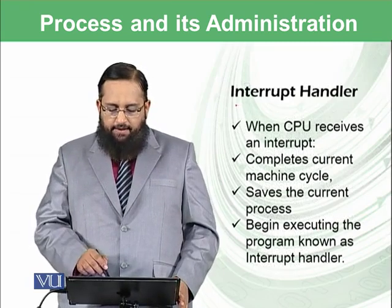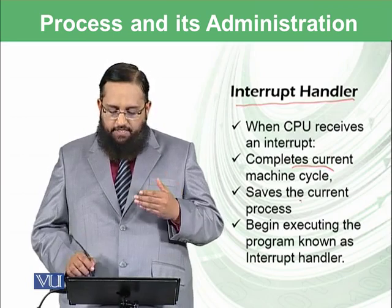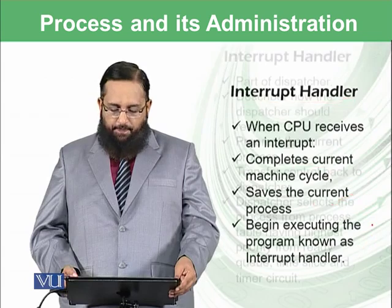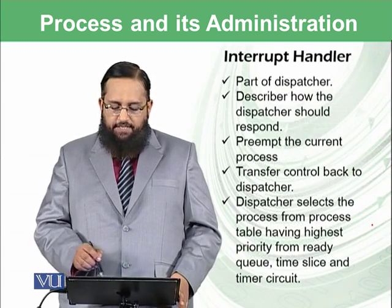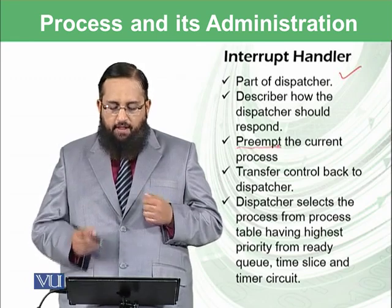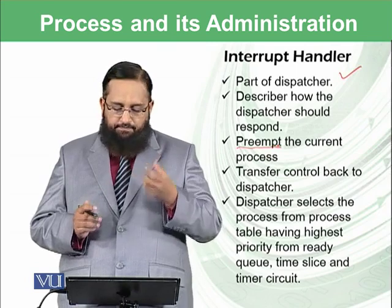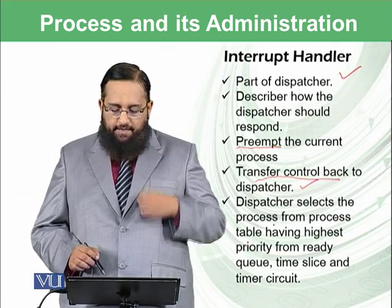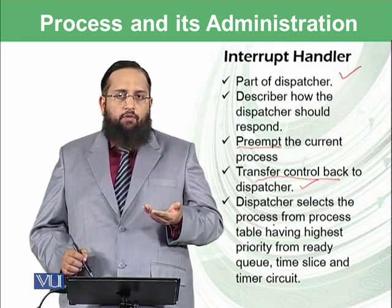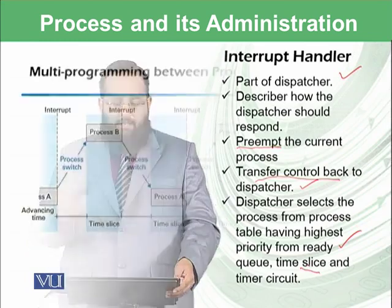This interrupt is handled by the interrupt handler. When the CPU receives an interrupt, it completes the current machine cycle, saves the current process state, and then begins executing the interrupt handler. The interrupt handler is basically part of the dispatcher — it describes how the dispatcher should respond. One action is to preempt the current process, meaning it forcefully takes the CPU from that process, which is known as preemption. It then transfers control back to the dispatcher, which selects the process from the process table having the highest priority, or if priorities are equal, whichever process arrived first is selected from the ready queue. A time slice is given and the timer circuit is again initiated.